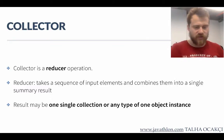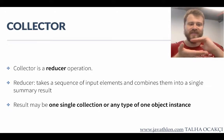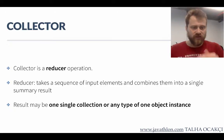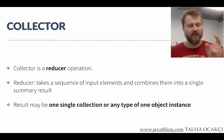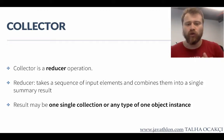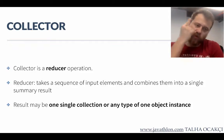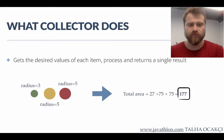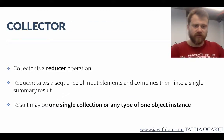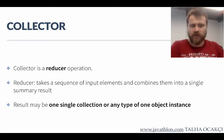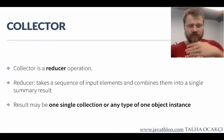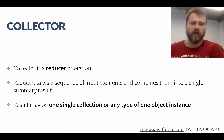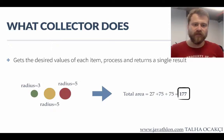A reducer operation takes a sequence of input elements and combines them into a single summary result. This result may be a single collection or any type of object instance. Simply, they collect the items, may get some attributes of these items, process the data, and output only one output.